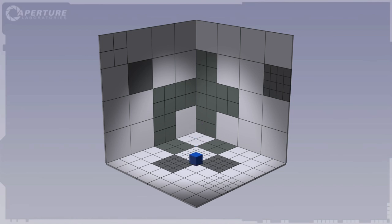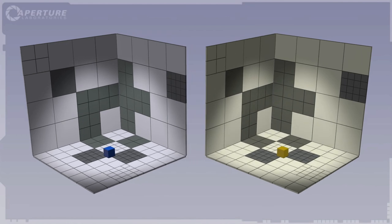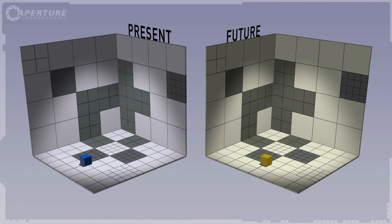A cube placed in the present will appear in the same position in the future. Moving a cube in the present will automatically update the location of the same cube in the future.